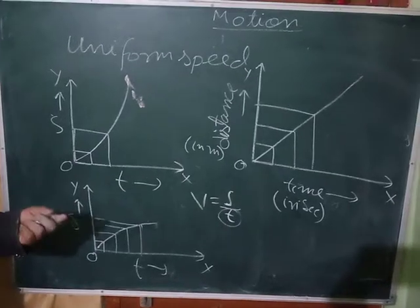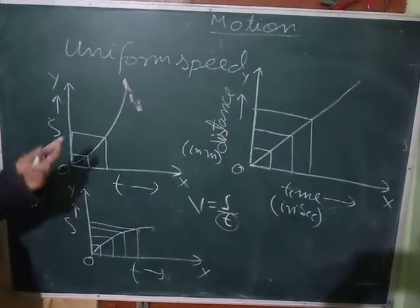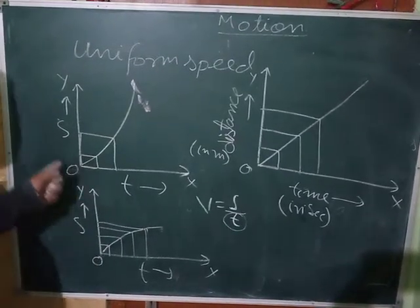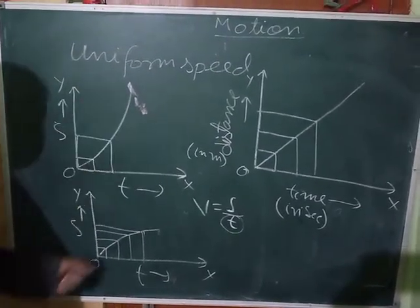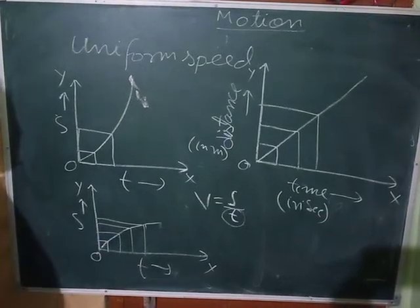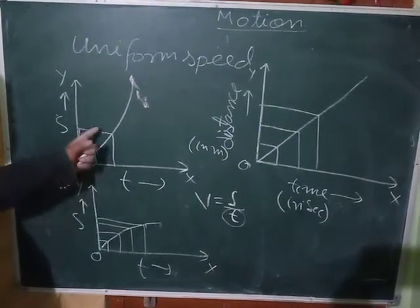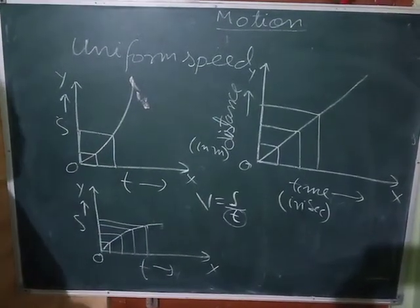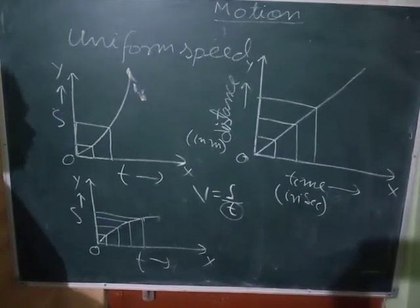To summarize the graphs: the straight line is uniform speed; the other two curves represent non-uniform speed — one where speed is increasing, and one where speed is decreasing.